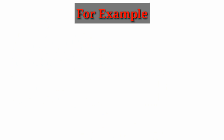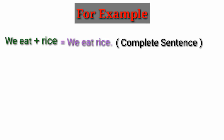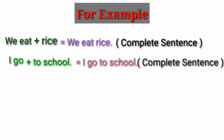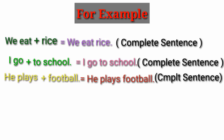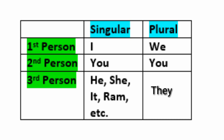He plays. What does he play? With the word rules, the structure is subject plus verb. For example: 'We eat' — this is an incomplete sentence. 'We go', 'I go to school', 'He plays football' — this is a complete sentence. This is the form of the present indefinite tense.